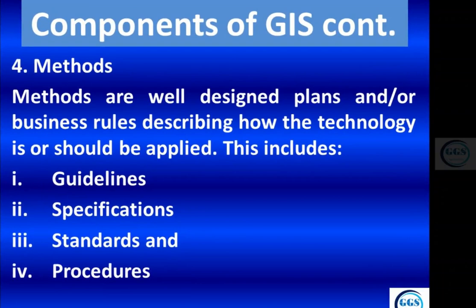The fourth component of GIS is methods. Methods are well-designed plans or business rules describing how the technology is or should be applied. Methods may include guidelines, specifications, standards, and procedures — all of these comprise the methods component of GIS.